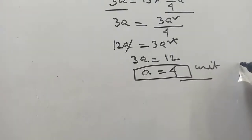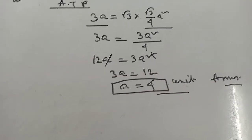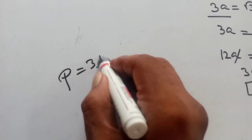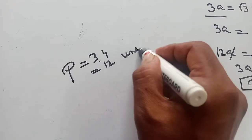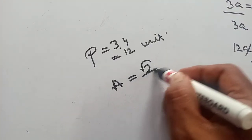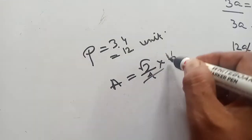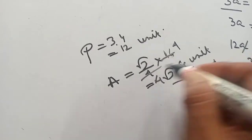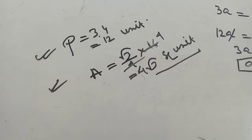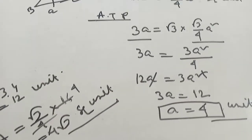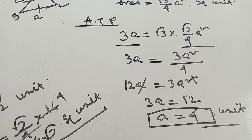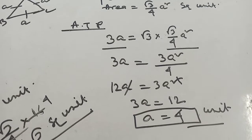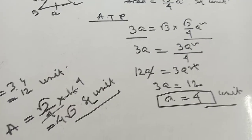This is the answer. The side of the equilateral triangle is 4 units. Now you can also find the perimeter: P equals 3 into 4, which is 12 units. And area equals root 3 by 4 into 4 squared, which gives 4 root 3 square units. If asked for perimeter and area, you can find them from the side we found here.